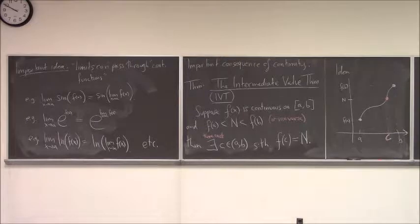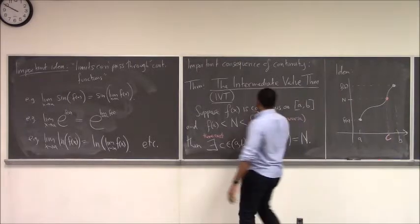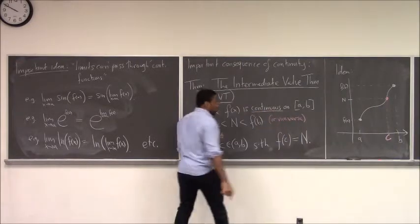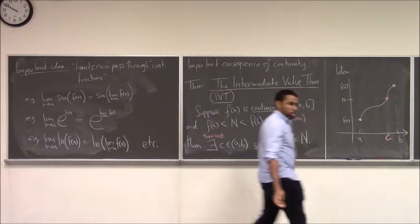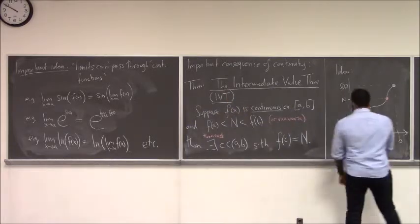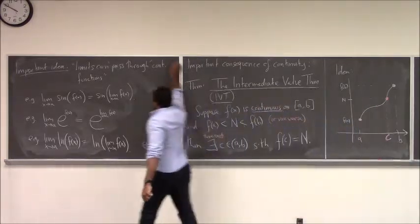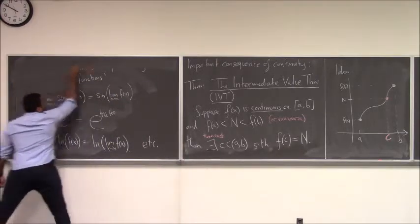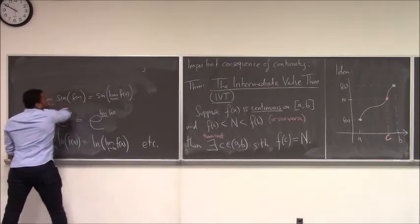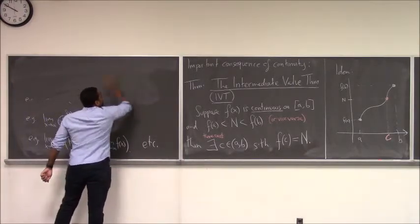Any value between - your function will attain all y values between these endpoint values, assuming it's continuous on [a, b]. So any y value between them, there is definitely a number strictly between a and b that will hit that value when plugged into the function. Such a value must exist. This is a consequence of continuity - f has to be continuous for this to be true. This is a very important theorem called the Intermediate Value Theorem.